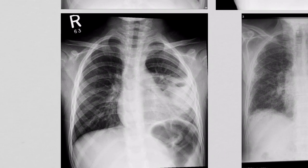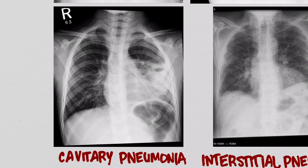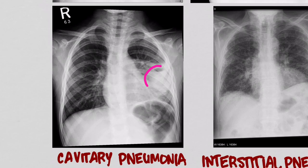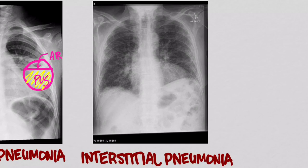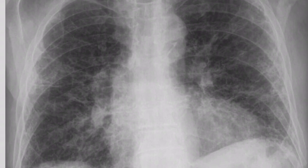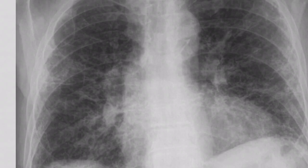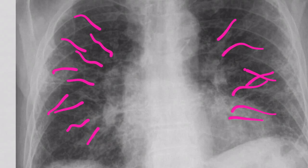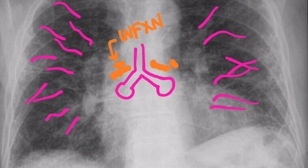Next is a cavitary pneumonia. You can see a little ball here with an air-fluid level in it — that fluid is going to be pus, forming that cavity. And finally, the interstitial pneumonia — zooming in closer, you can see it has a very fine, patchy appearance that almost looks like a lace-like net, which is why it's called a reticular pattern. That's an interstitial pneumonia, where pus collects in the interstitial space.